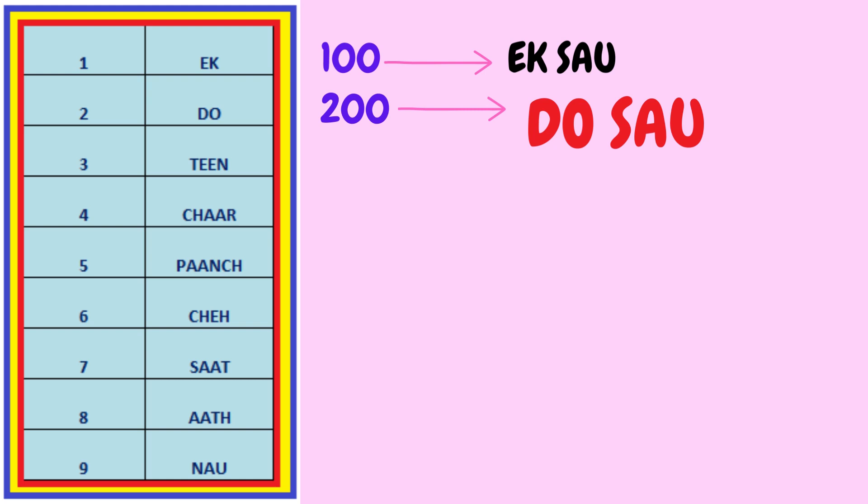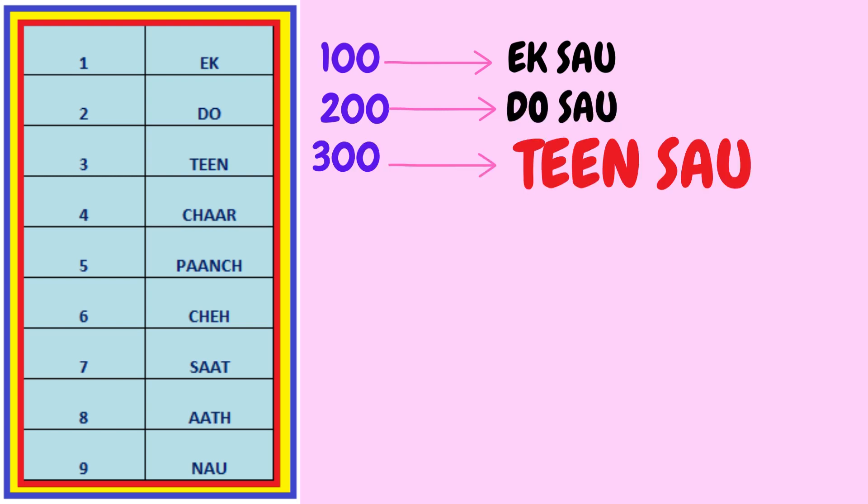Then comes 200. The Hindi word for 2 is 'do' and 100 is again 'saw'. So 200 becomes 'do saw'. Then comes 300. The Hindi word for 3 is 'teen' and 'saw' is the equivalent of 100. So 300 is known as 'teen saw'.